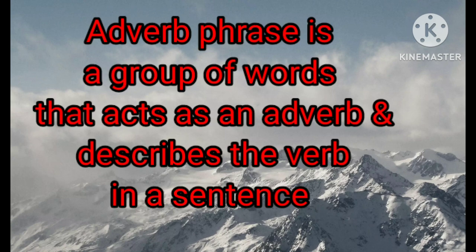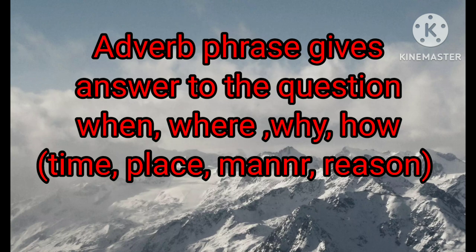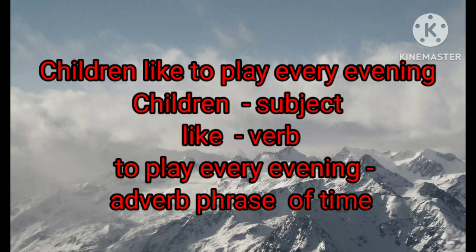The last type is adverb phrase. An adverb phrase is a group of words that acts as an adverb and describes a verb. Adverb phrase gives answers to the questions when, where, why, and how. It expresses time, place, manner, and reason. Example: 'Children like to play every evening.' The phrase here is 'every evening.' Because it expresses time and gives an answer to the question 'when,' this phrase is an adverb phrase of time.